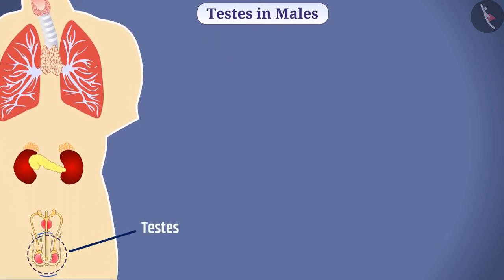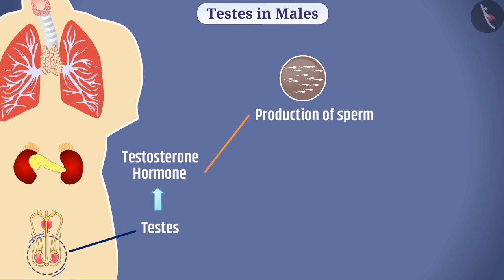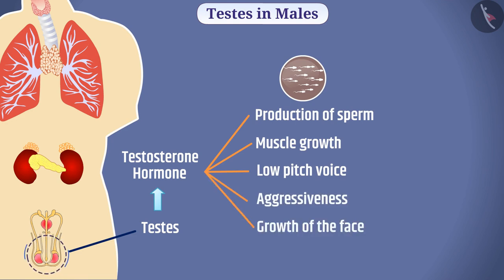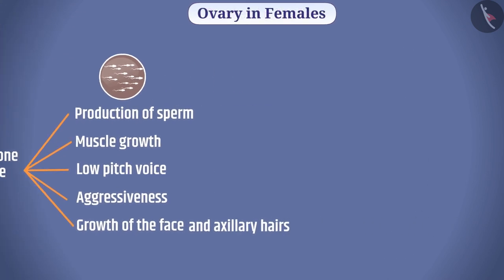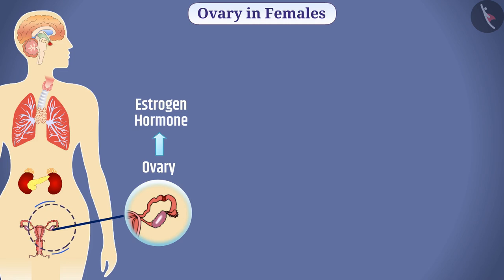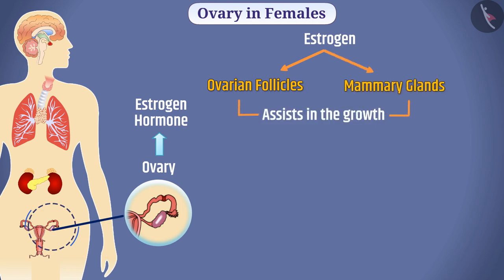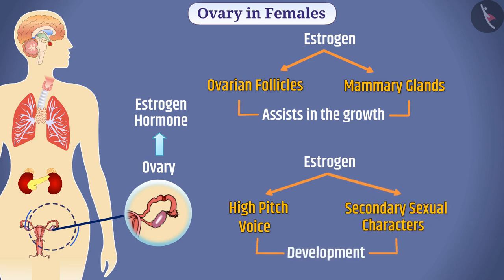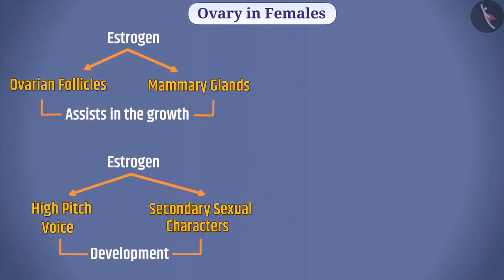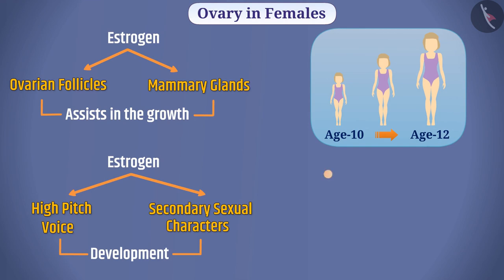In males, a pair of testes secretes testosterone hormone. Testosterone helps in the production of sperm and also stimulates muscle growth, low pitch voice, aggressiveness, and growth of face and axillary hairs. In females, a pair of ovaries secretes estrogen hormone. Estrogen assists in the growth of ovarian follicles and mammary glands, and causes development of high pitch voice and secondary sexual characters in females. All these changes occur at the age of 10 to 12 years and are associated with puberty.